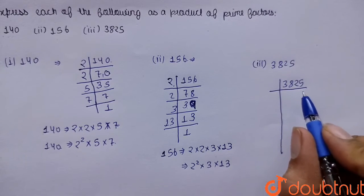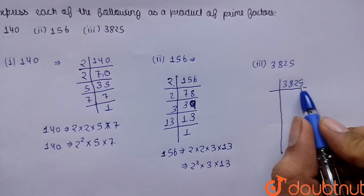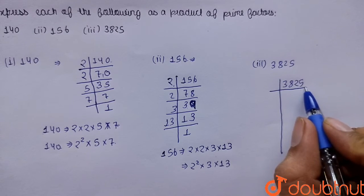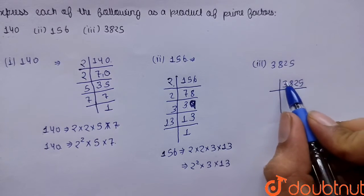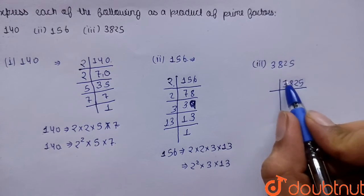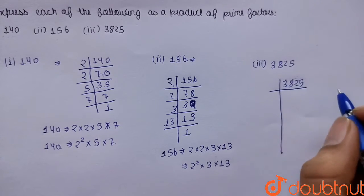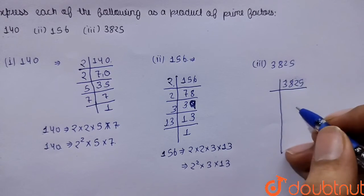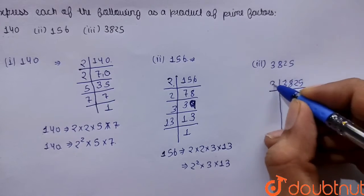So let's add these terms. 3 plus 8 plus 2 plus 5 will give us 18. 18 is divisible by 3 which means this is also divisible by 3.